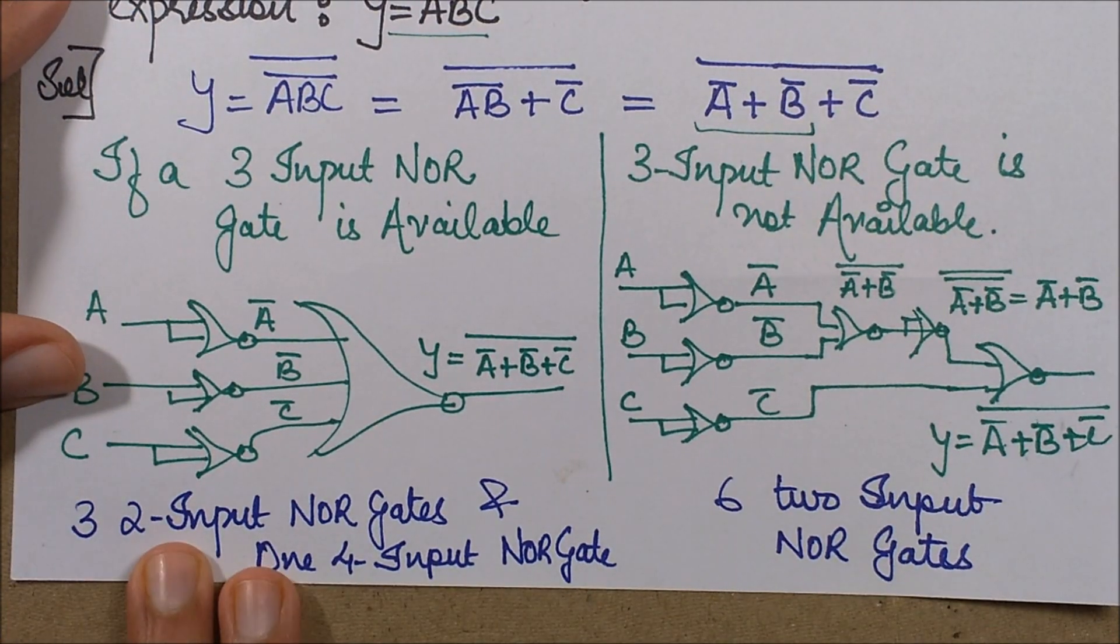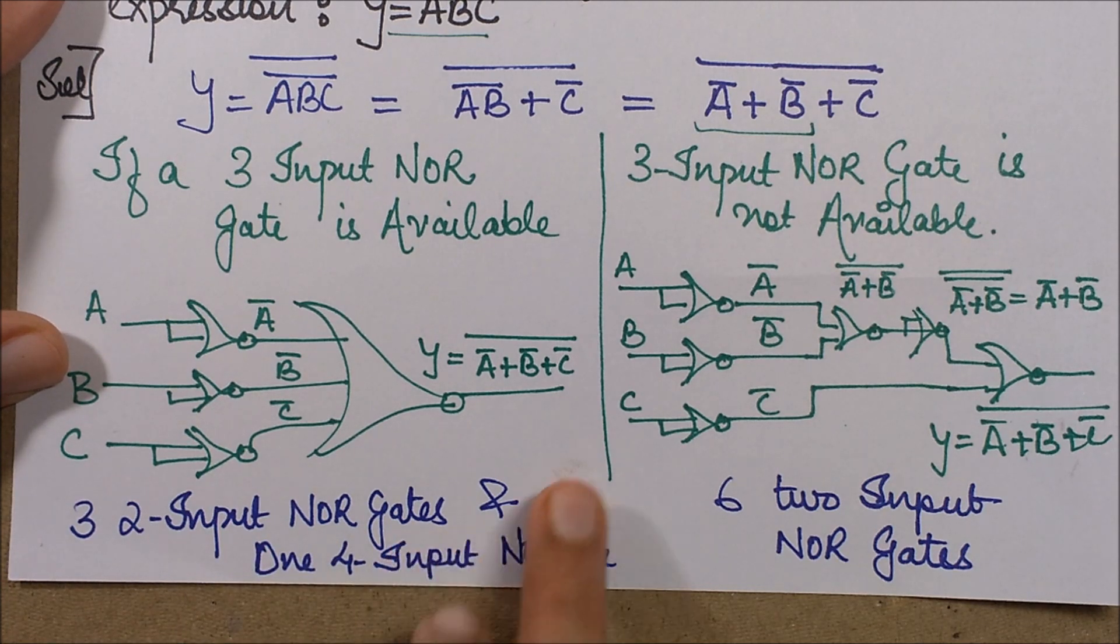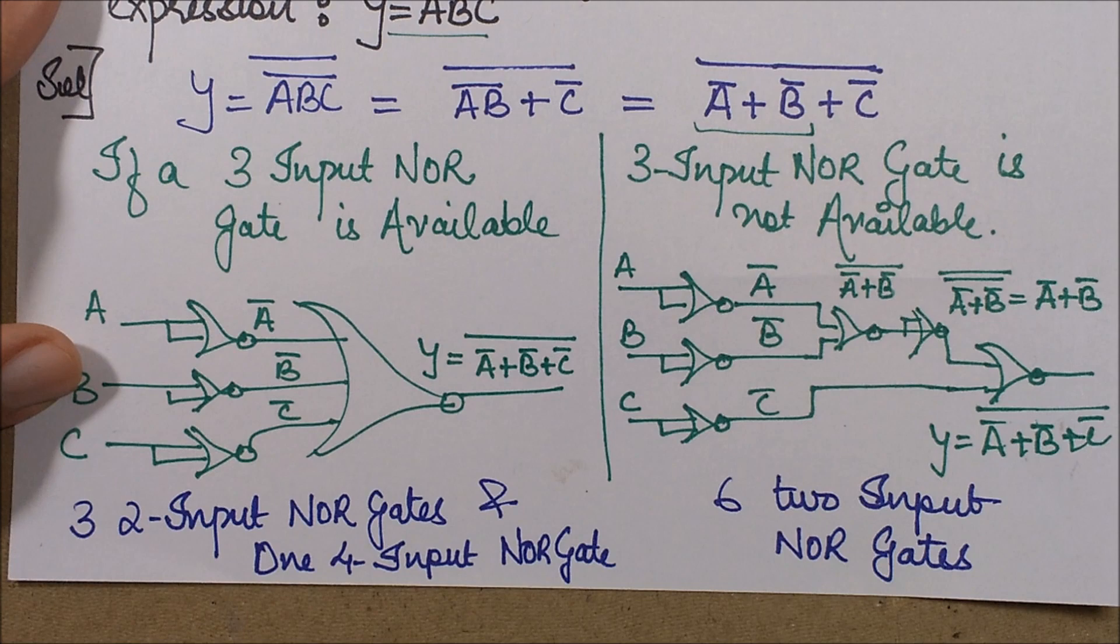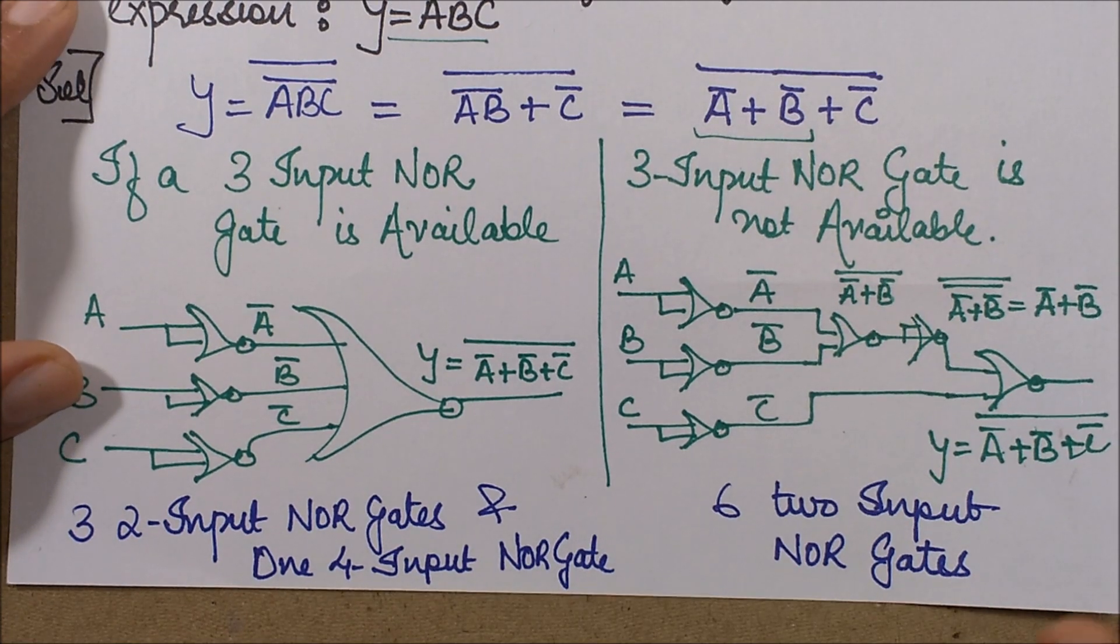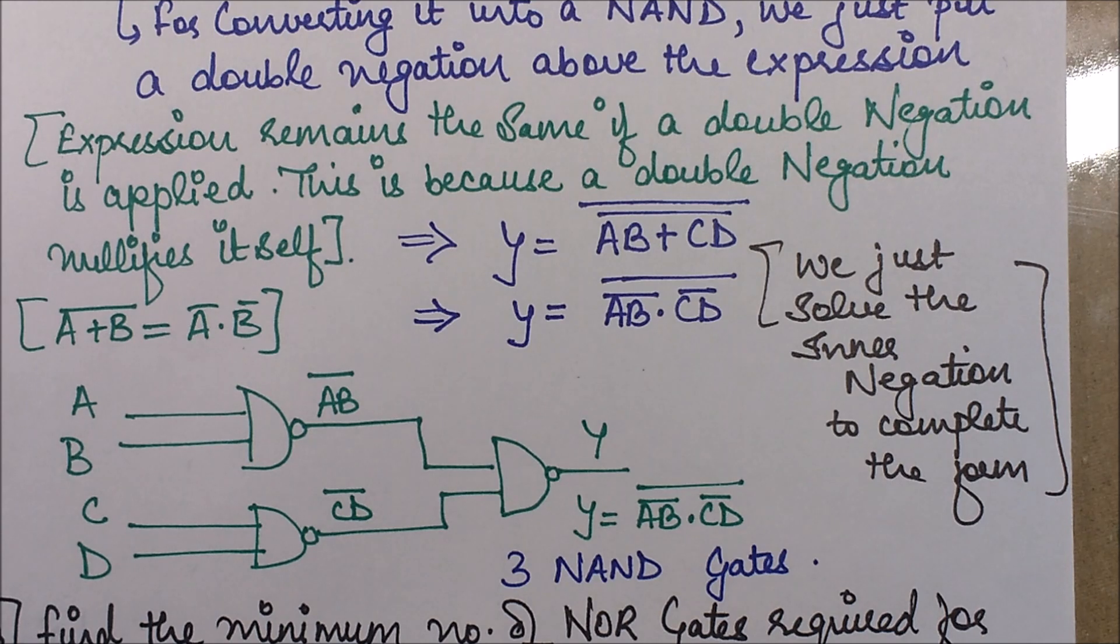And over here, six two-input NOR gates were required, and one four-input NOR gate was required in this case. So that's all for this particular video of finding the minimum number of NAND gates and NOR gates.